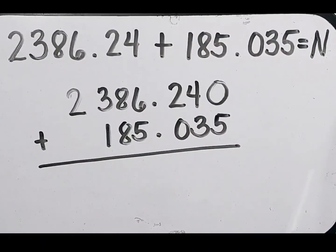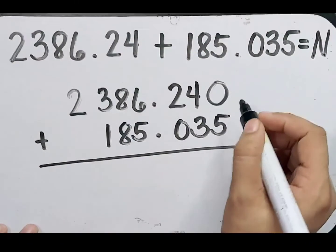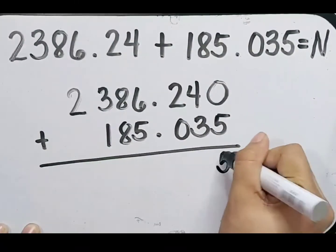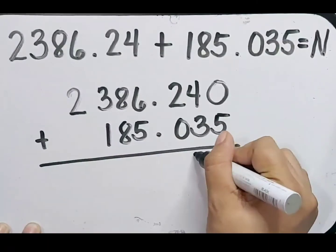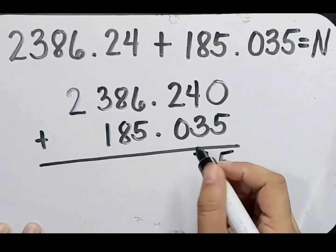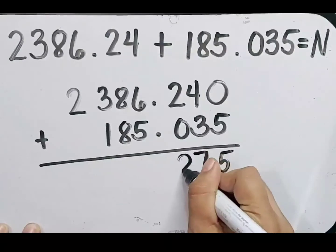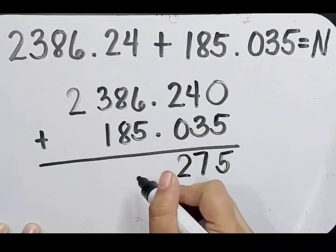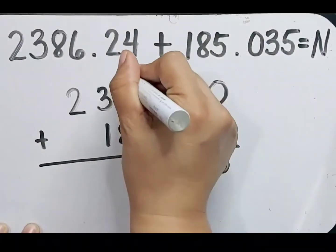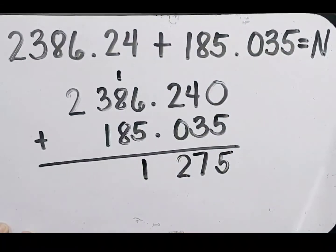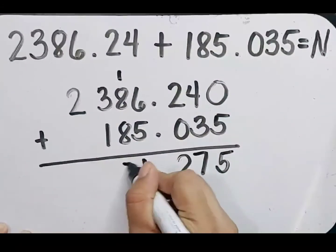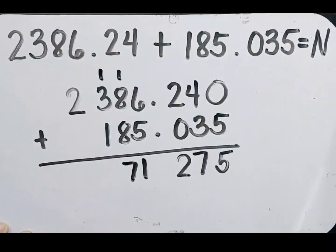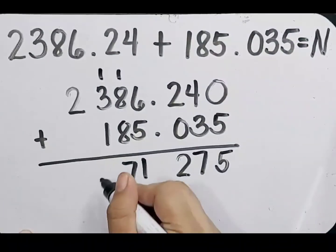Now let's add this as we are adding whole numbers. 0 plus 5 equals 5. 4 plus 3 equals 7. 2 plus 0 equals 2. 6 plus 5 equals 11. Regroup 1. 1 plus 8 plus 8 equals 17. 1 plus 3 plus 1 equals 5.